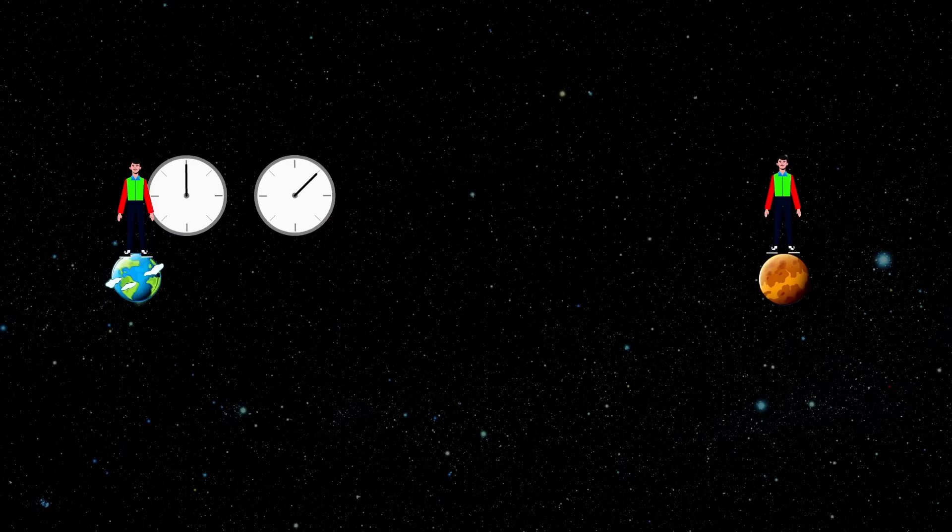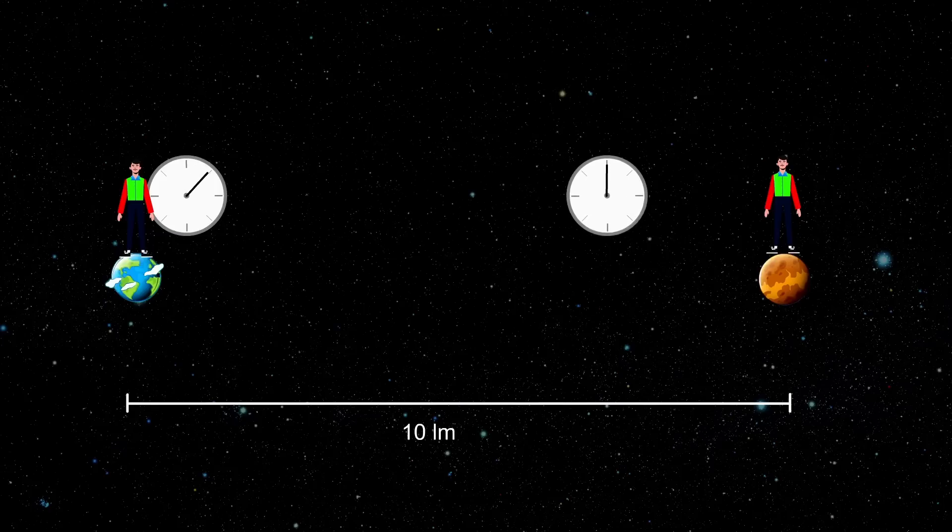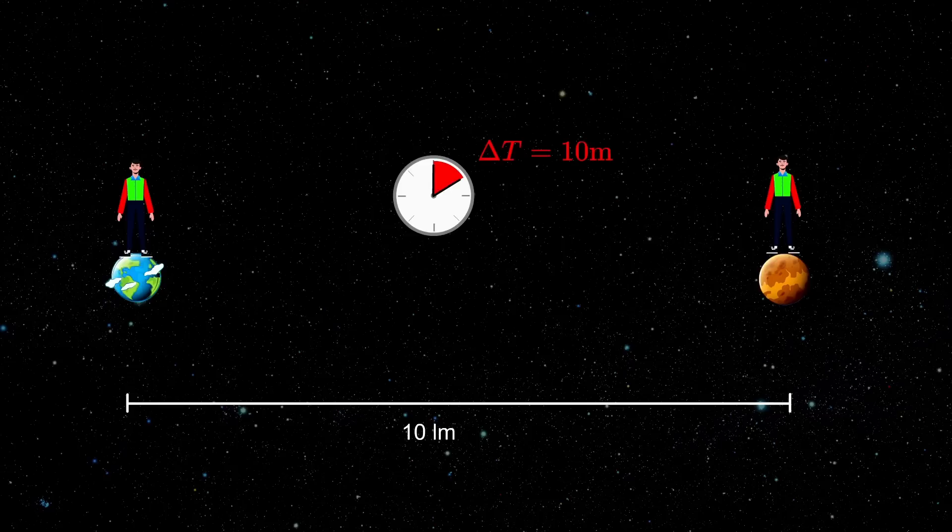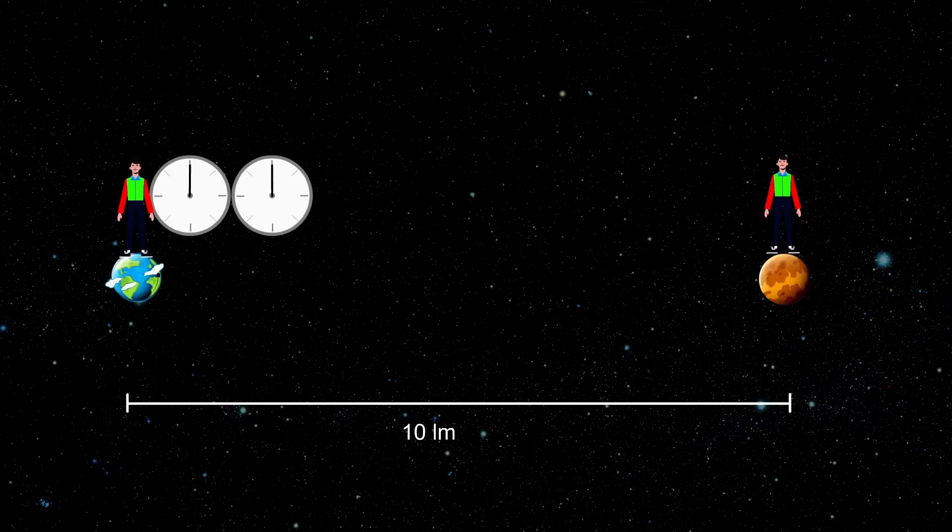For now let's suppose that the speed of light is the same in every direction. If we had two clocks at the same position, we can synchronize them. But if we took one clock and moved it 10 light minutes away with the speed of light, then these two clocks would be out of sync by 10 minutes due to extreme time dilation. This is however the extreme case when one clock moves with the speed of light.